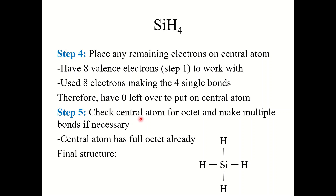Finally, step five: check the central atom for an octet and make multiple bonds if necessary. Silicon has two, four, six, eight — it has an octet. So this is the final structure. This one is pretty simple and straightforward.